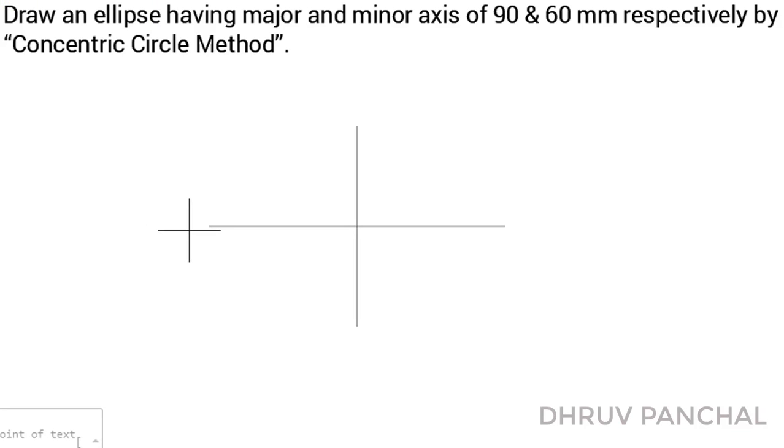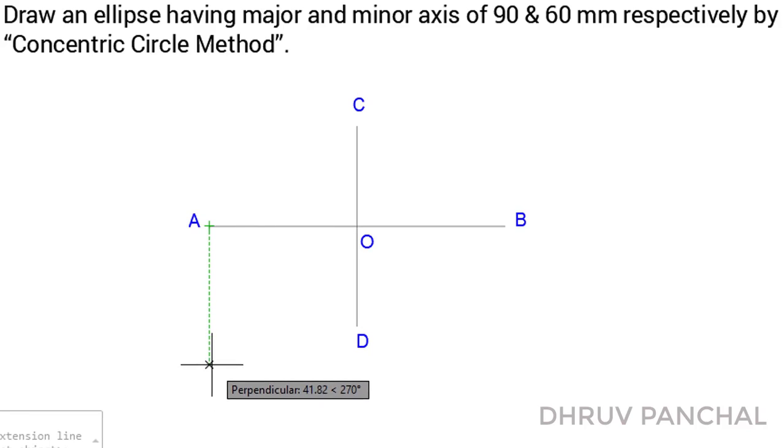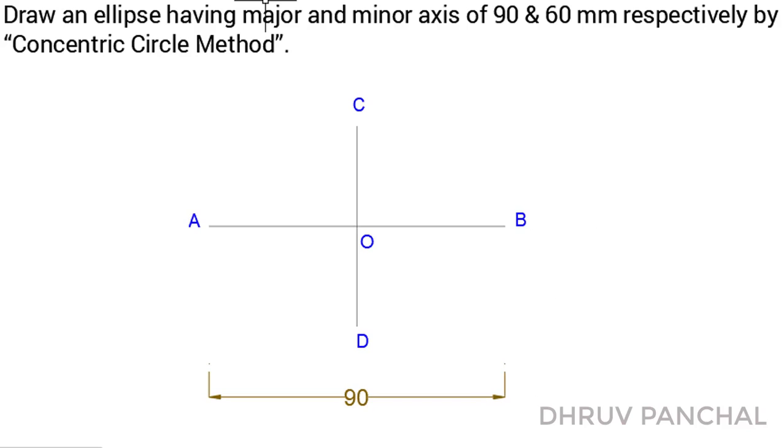Now, we will name the endpoints of major axis by point A, point B and for the minor axis by point C and point D and point O at the intersection point of major axis and minor axis. After that, we will mention the dimension of major axis 90 mm and minor axis 60 mm.